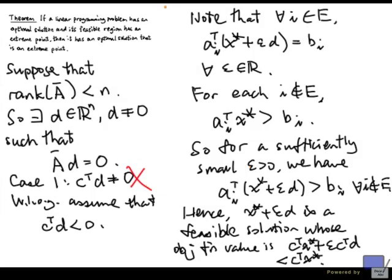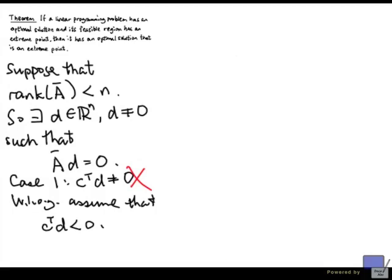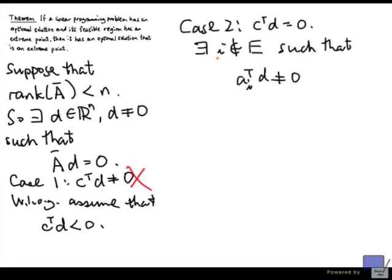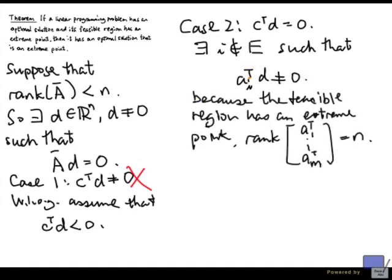So let's consider the second case, when c transpose d equals 0. First, observe that there must be an i not in E such that a_i transpose d is not 0. And this is where we use the fact that the feasible region has an extreme point. Well, if a_i transpose d equals 0 for all i, then that means d is in the null space of the matrix A_1 transpose up to A_m transpose, which is a contradiction.